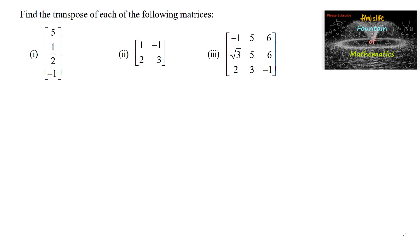Find the transpose of each of the following matrices. First one, let us consider A is equal to matrix 5, 1 by 2, minus 1. This is a matrix of order 3 rows and 1 column.